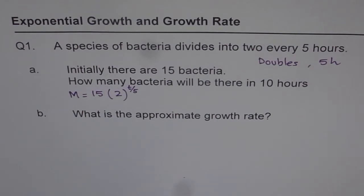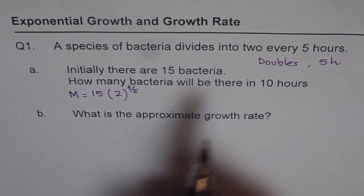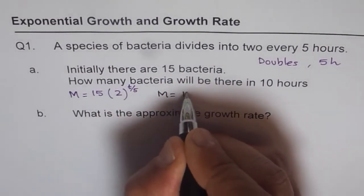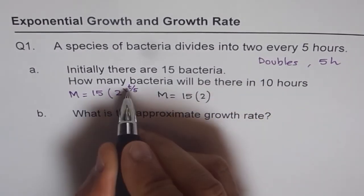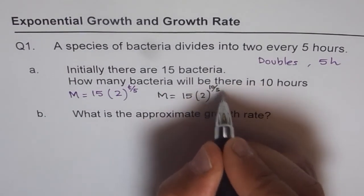So now from here we can say, we can get how many bacteria will be there in 10 hours. So number of bacteria M will be equals to 15 times 2 to the power of, instead of T, we will write 10 hours now. So we get 10 over 5, which is 15 times 2 squared.